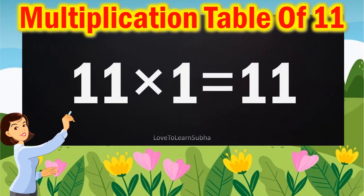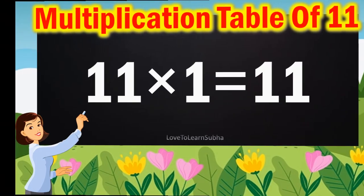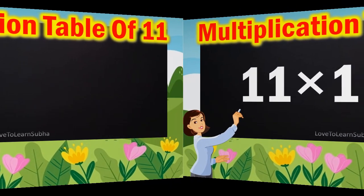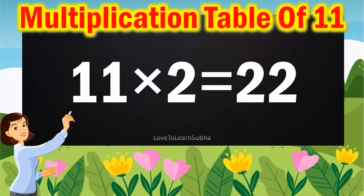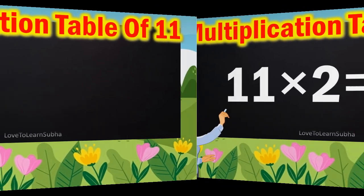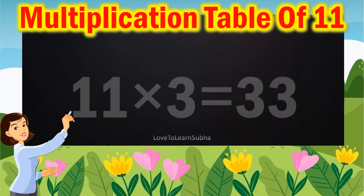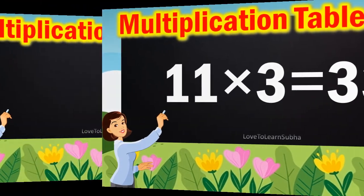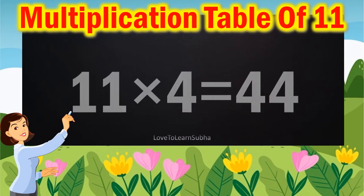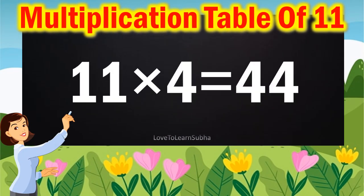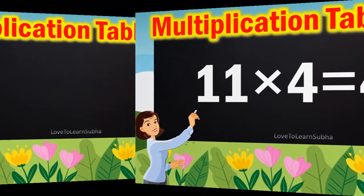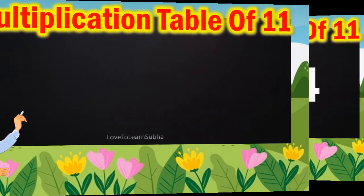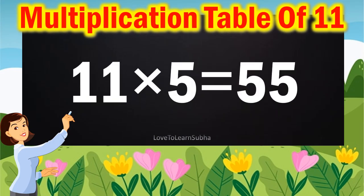11 1s are 11. 11 2s are 22. 11 3s are 33. 11 4s are 44. 11 5s are 55.